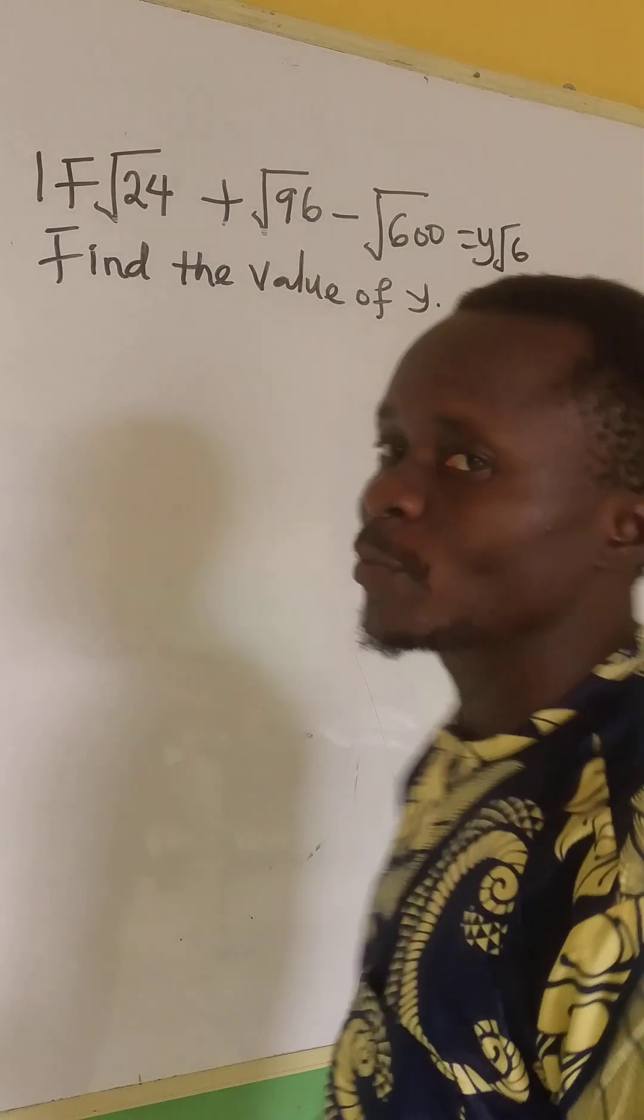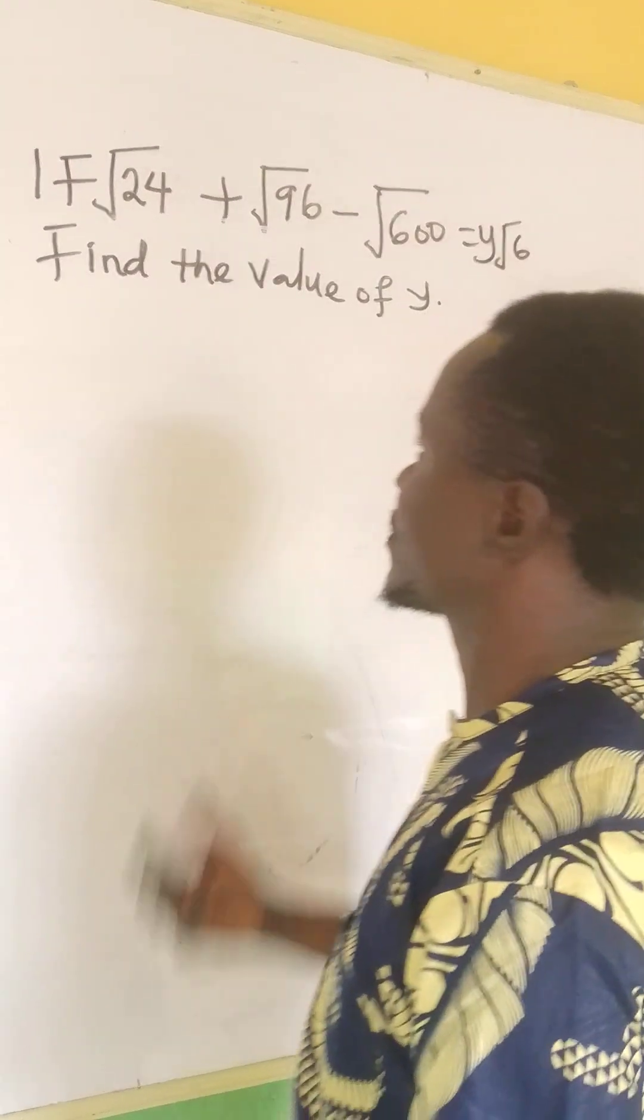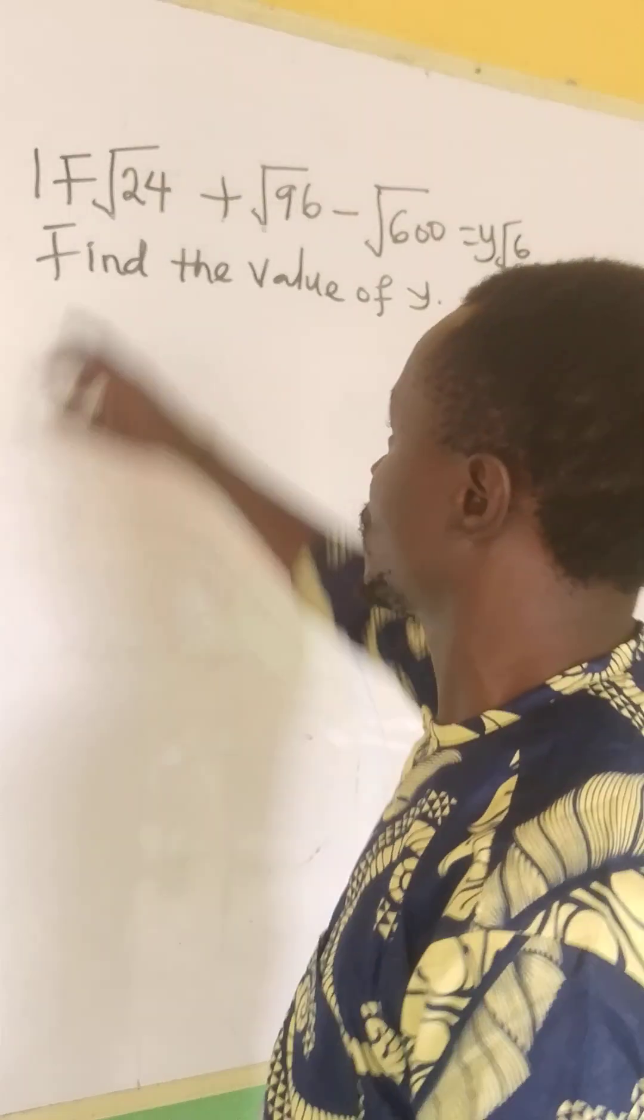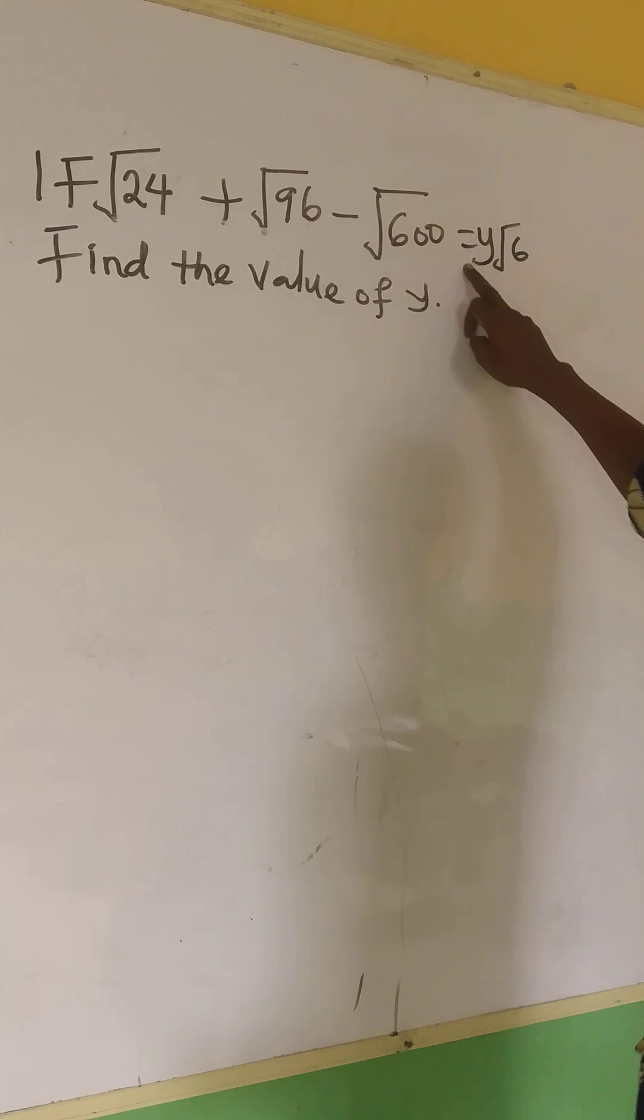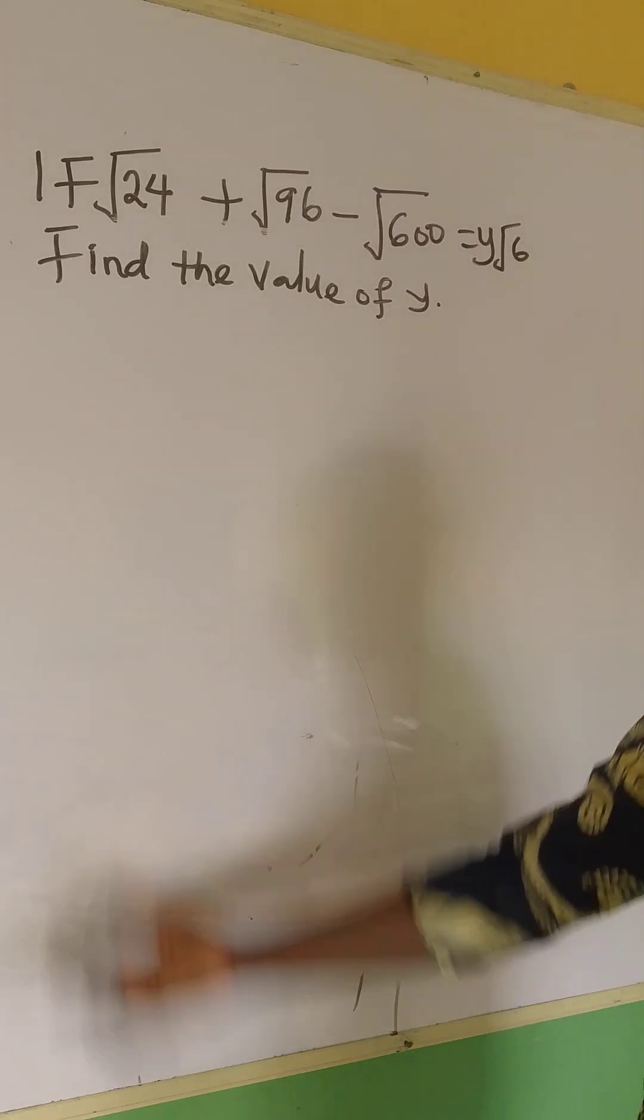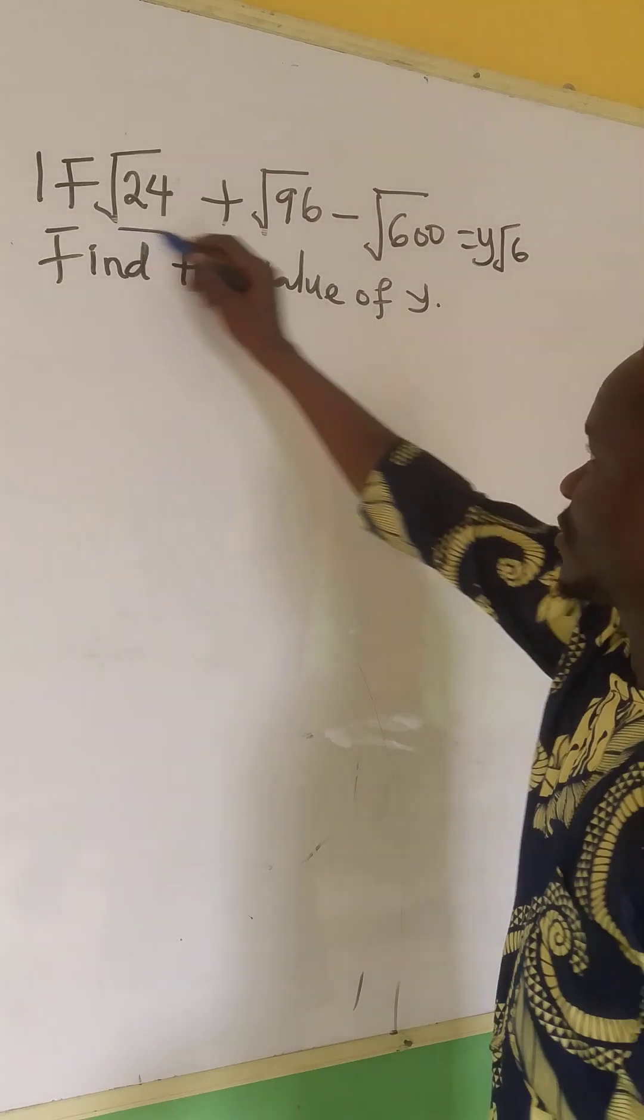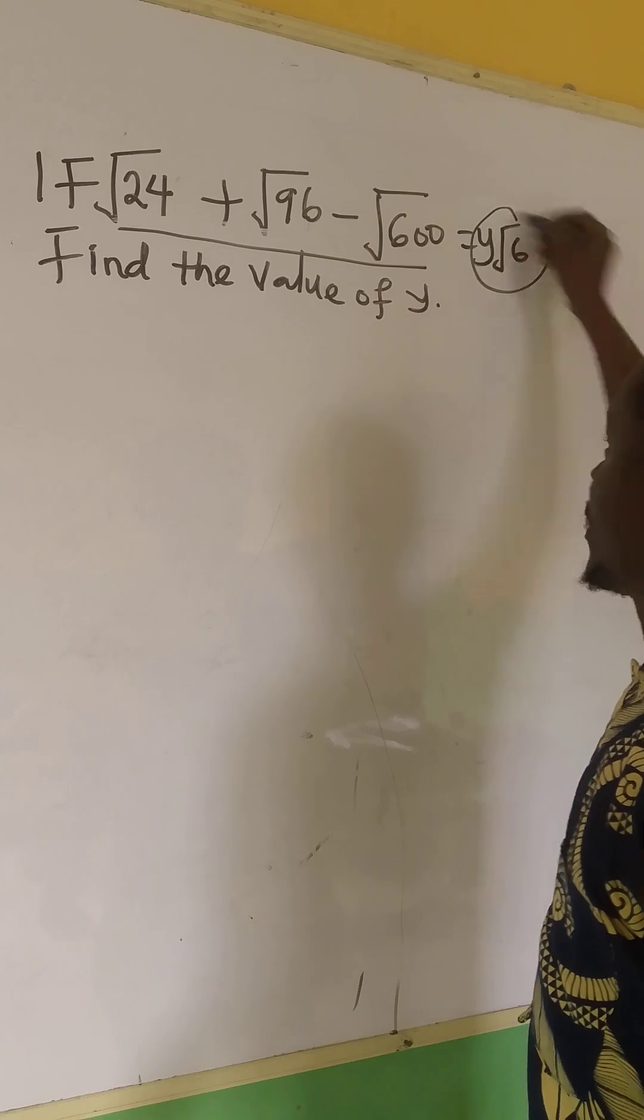Good day everyone, and welcome to today's class. Now let's examine this question we have. If √24 + √96 - √600 = y√6, find the value of y. So I will solve this and compare with this.